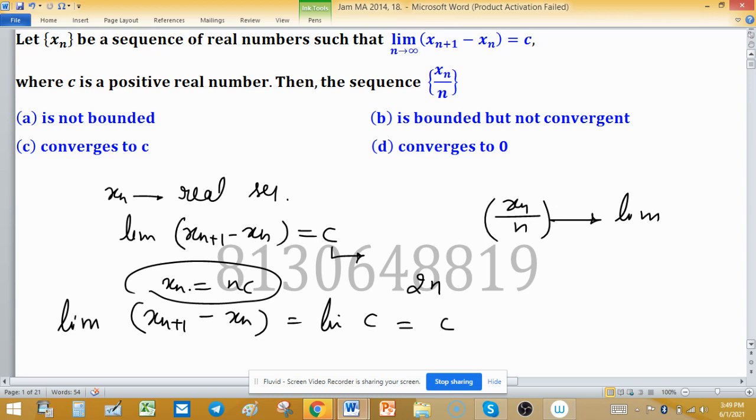The limit also exists for this sequence. We have to tell about XN upon N. As XN is NC, XN upon N equals NC upon N, and N cancels out, so this is C. The limit of XN upon N is equal to the limit of C, which is a constant sequence.